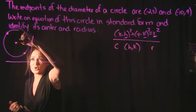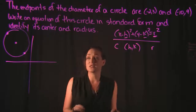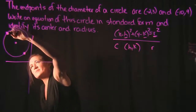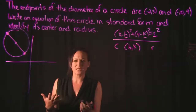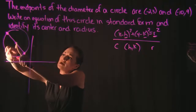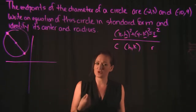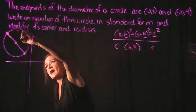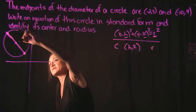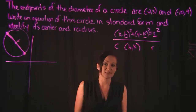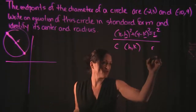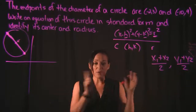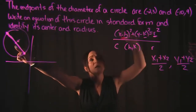The way we find the center is by using the endpoints. The center of the circle is going to be smack in the middle of the diameter line. So how do we find that center point? We find it by finding the midpoint of that line using the midpoint formula: x1 plus x2 over 2, and y1 plus y2 over 2. Plugging in will give us the center point, which we plug in for h and k.